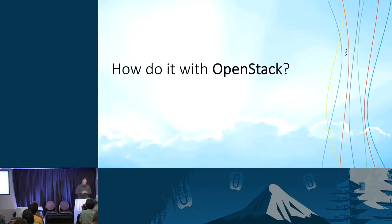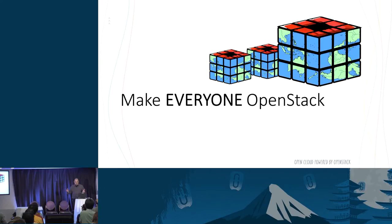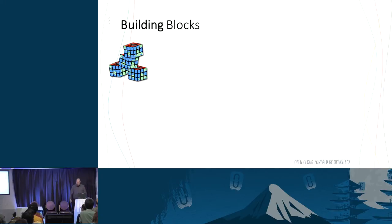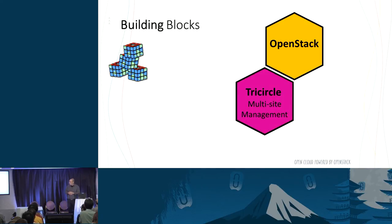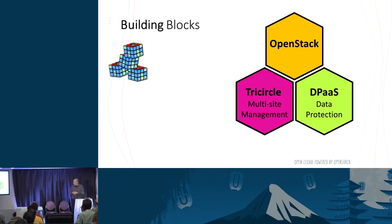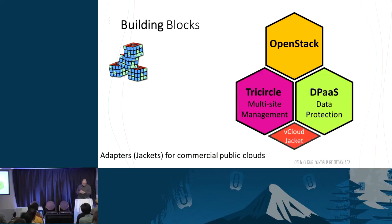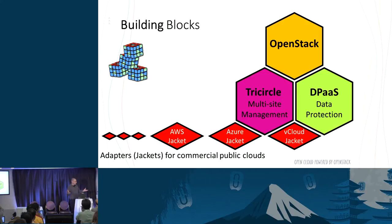Why are we talking about this in an OpenStack meeting? Because we're going to make everyone OpenStack, and we'll be able to use OpenStack to do it. The building blocks we're going to use are: first, OpenStack; second, the Tricircle multi-site management which was presented two hours ago; and third, Data Protection as a Service, a new project we are launching — another colleague will talk about this on Thursday. How to make it work with all those public clouds is by using Jackets.